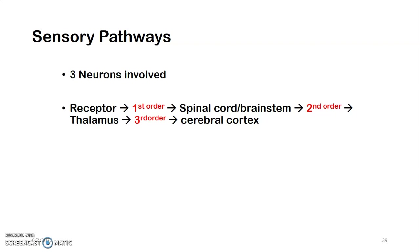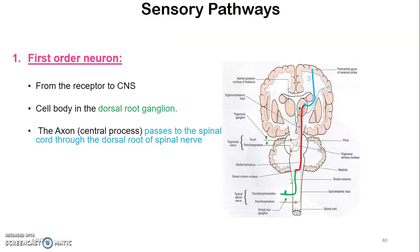The sensory pathway has three neurons. From the receptor, the first-order neuron carries information to the spinal cord or brainstem. Within the spinal cord or brainstem, the second-order neuron synapses and carries information to the thalamus. From the thalamus, the third-order neuron carries information to the cerebral cortex. Remember: first-order neuron from receptor to spinal cord or brainstem; second-order from spinal cord or brainstem to thalamus; third-order from thalamus to cerebral cortex.